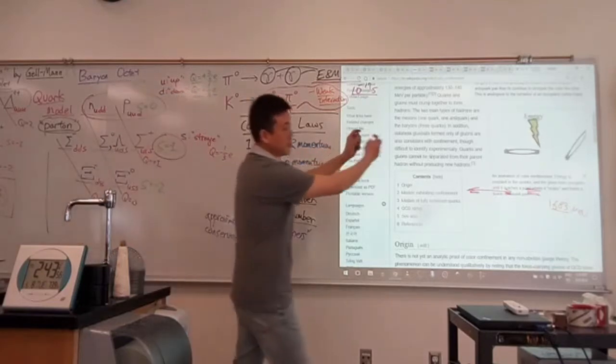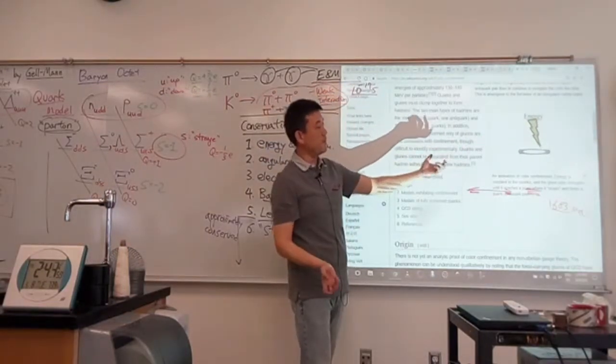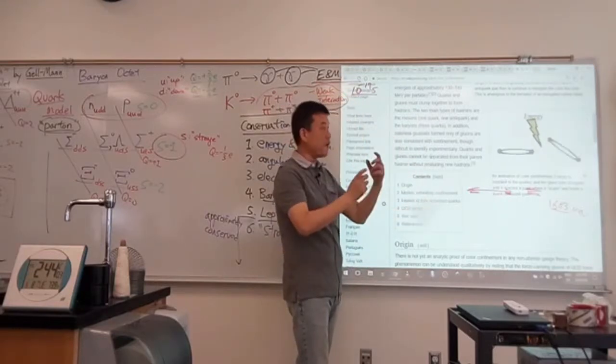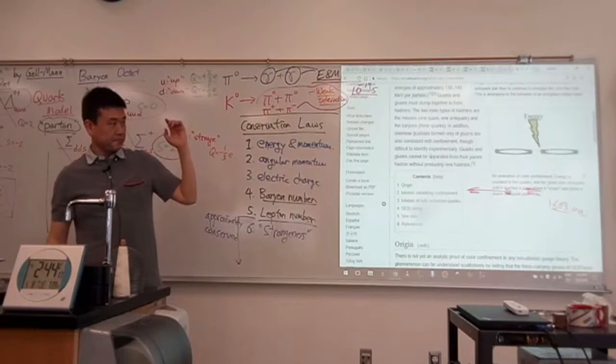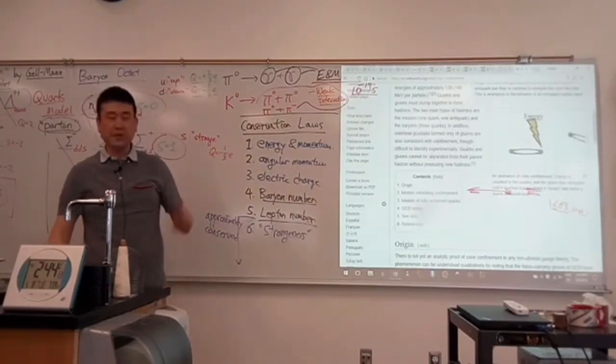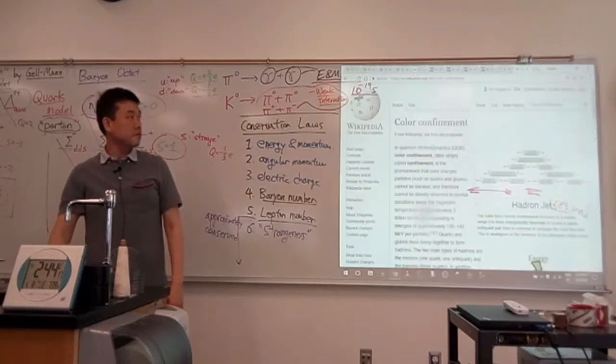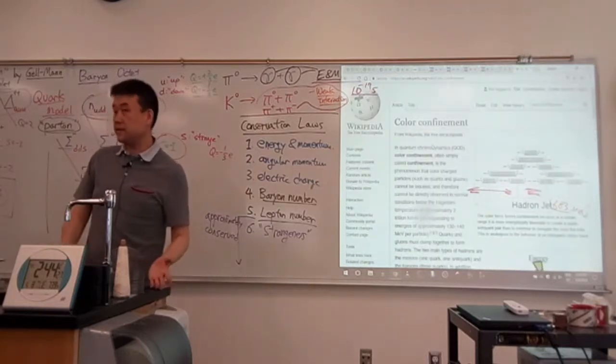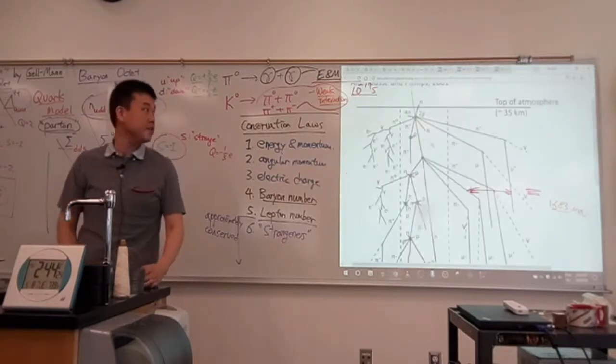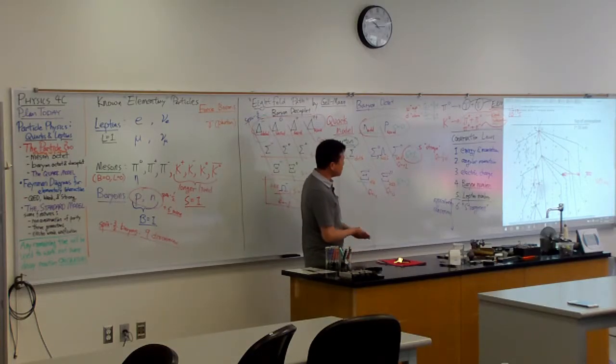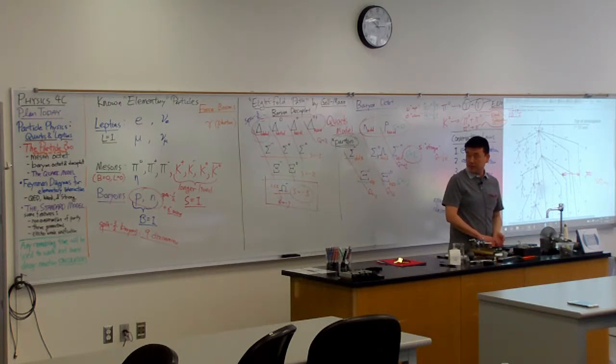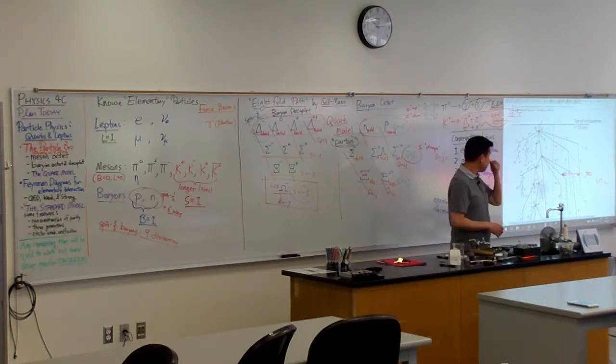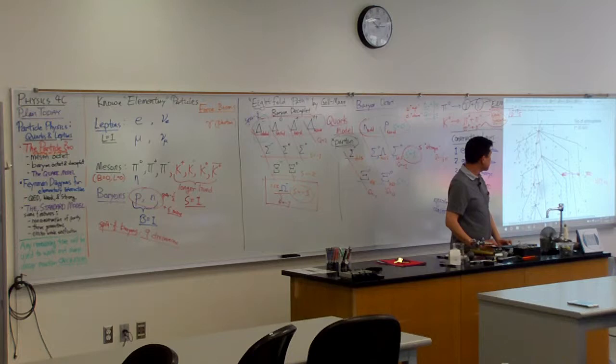But this idea of color confinement, or quark confinement, has been used to explain why we would never find free quark. Because as you try to separate quarks, there's so much more energy involved in it that you would produce new pair of quark-antiquark pair. And that actually represents something that's associated with something called asymptotic freedom. You can read more about it on your own. But what I'm fessing up right now is that no one has seen free quark. But the reason people have come to believe in the idea of quark model is associated with something called November Revolution.